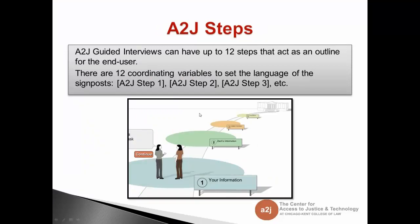The next program variable to talk about is A to J steps. A to J guided interviews have up to 12 steps that act as an outline — the path the avatar follows to the courthouse or whatever end graphic you use. The different colored bubbles are hit each time, and within each step you can ask as many questions as you'd like. There's no limit on questions per step, but there is a limit of up to 12 steps.